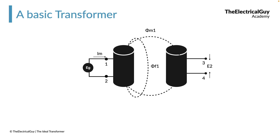That is really what electromagnetic induction can do. Without any sort of physical connection, we could transmit voltage from one coil to another coil. The combination of these two coils is what we call a basic transformer — simple and easy to understand.